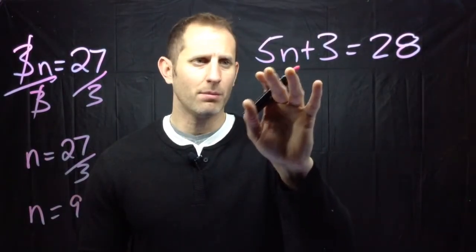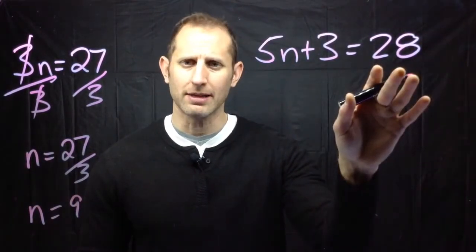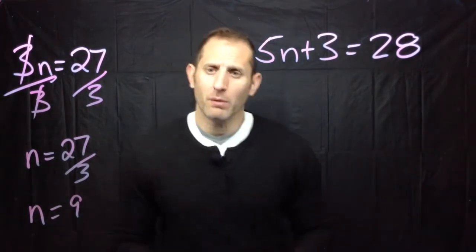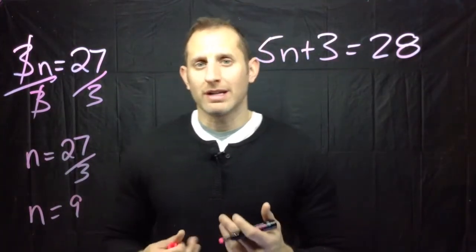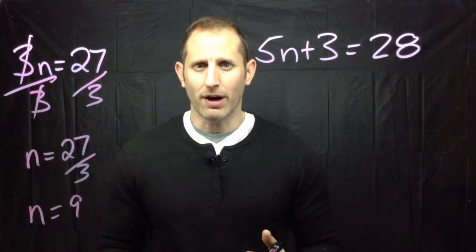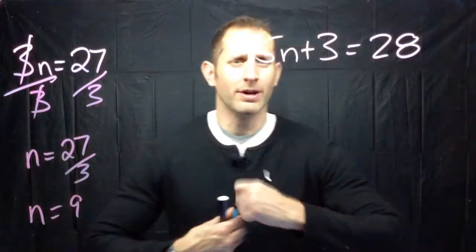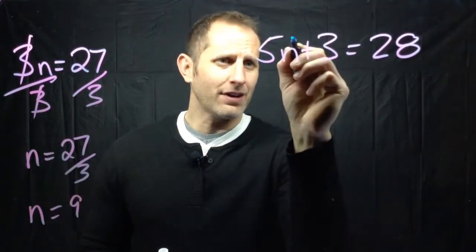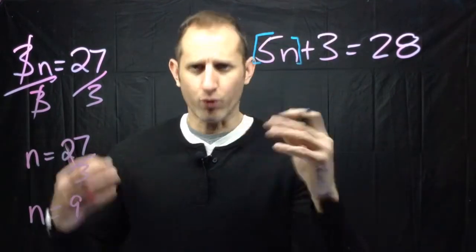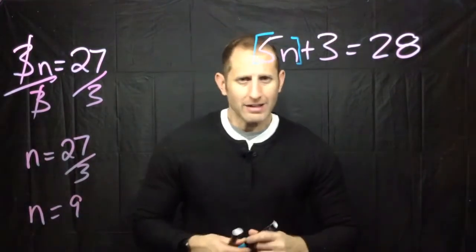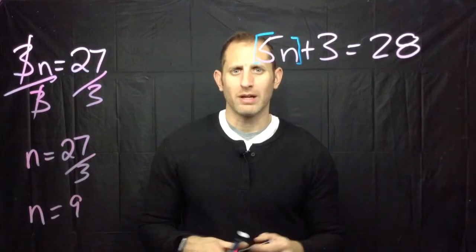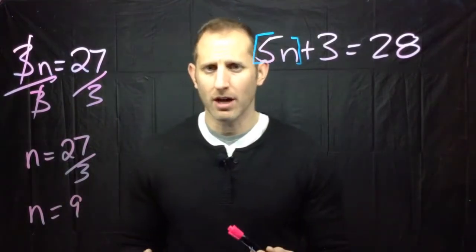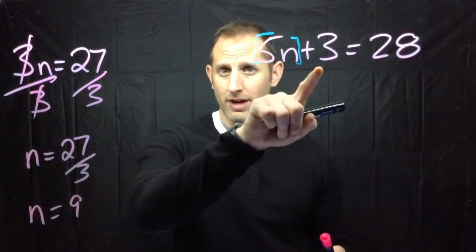Well in this case what we want to do is we want to work with whatever is furthest away from the variable. And what I'm going to do here is I'm going to show you if you look the 5 and the n they're kind of hugging each other. So they're really close together. That's going to make it a little bit more difficult for me to solve at this point in time. So what I want to do is I want to get rid of this.